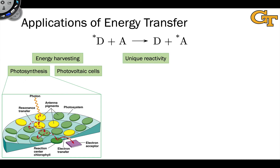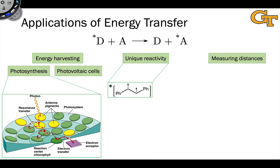Energy transfer also opens the door to unique reactivity of structures that are very difficult to access through other means. For example, the triplet states of alkenes are very difficult to access through electronic excitation, but they can easily be generated using sensitization from a molecule that forms a higher energy triplet state. This opens the door to unique photochemical reactions.